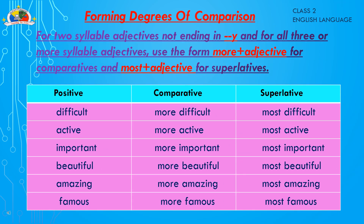For two-syllable adjectives not ending in 'y,' and for all three-or-more syllable adjectives, use 'more + adjective' for the comparative and 'most + adjective' for the superlative. For example: active → more active → most active; difficult → more difficult → most difficult; important → more important → most important; beautiful → more beautiful → most beautiful; amazing → more amazing → most amazing; famous → more famous → most famous.